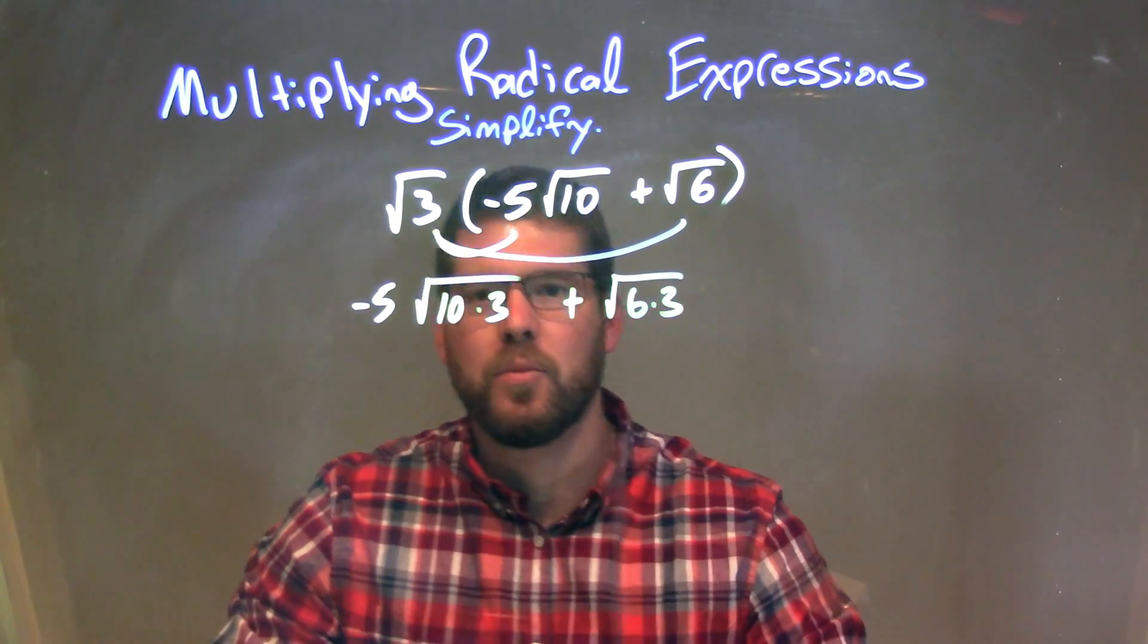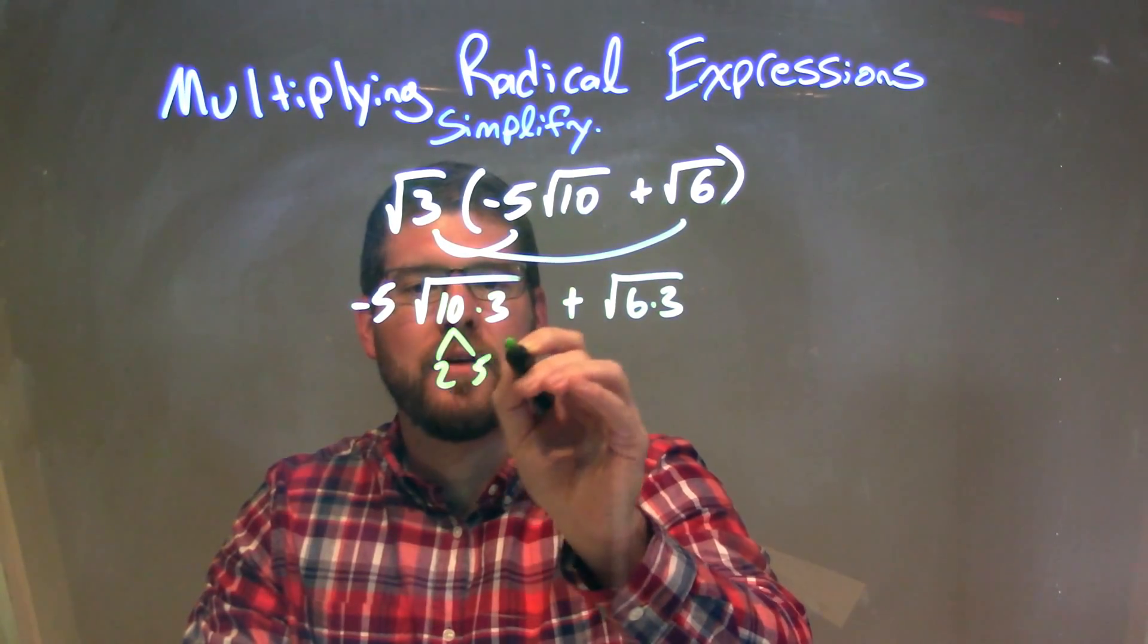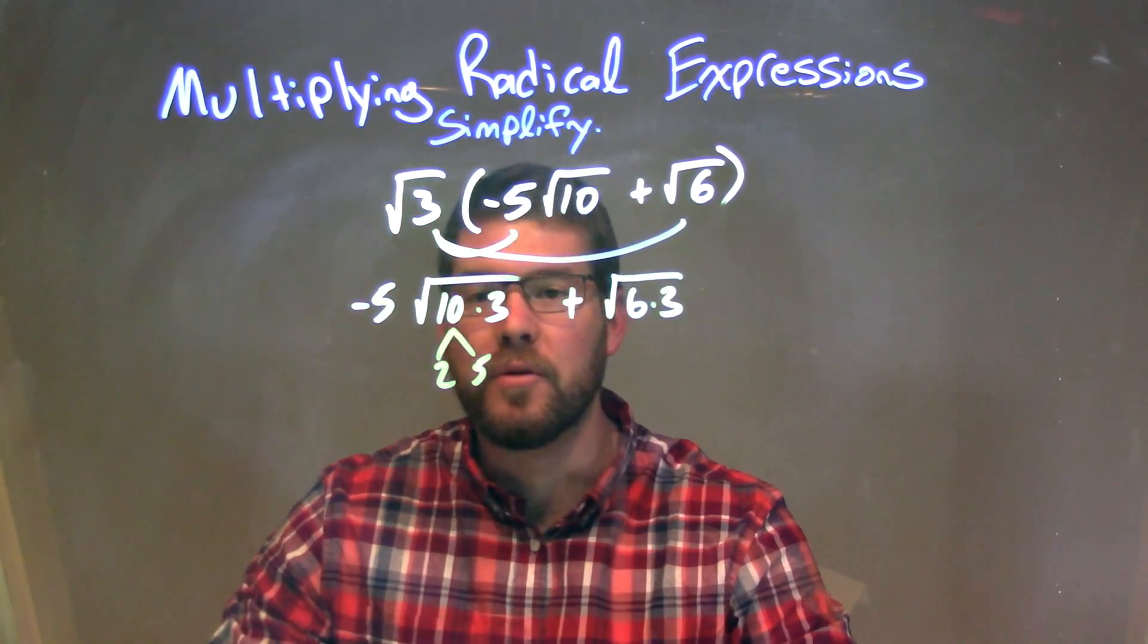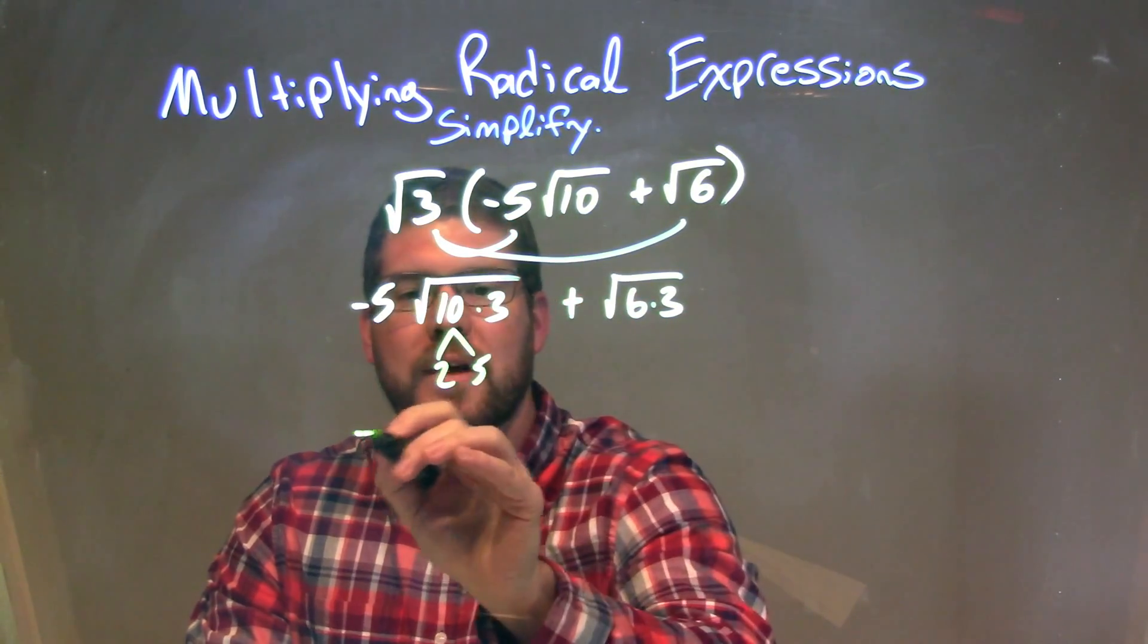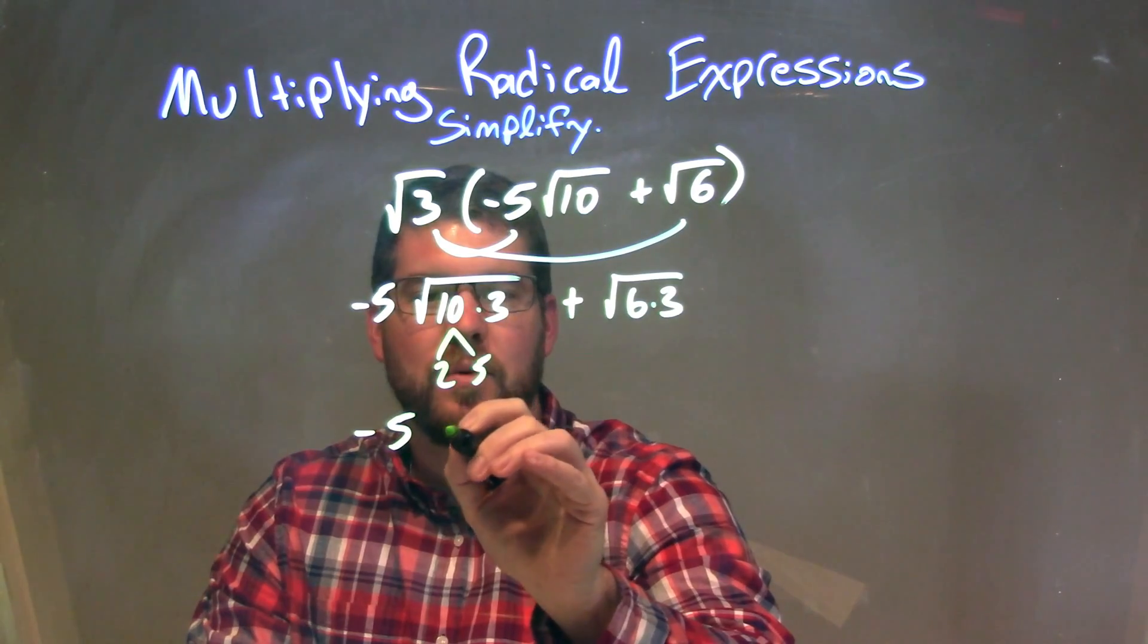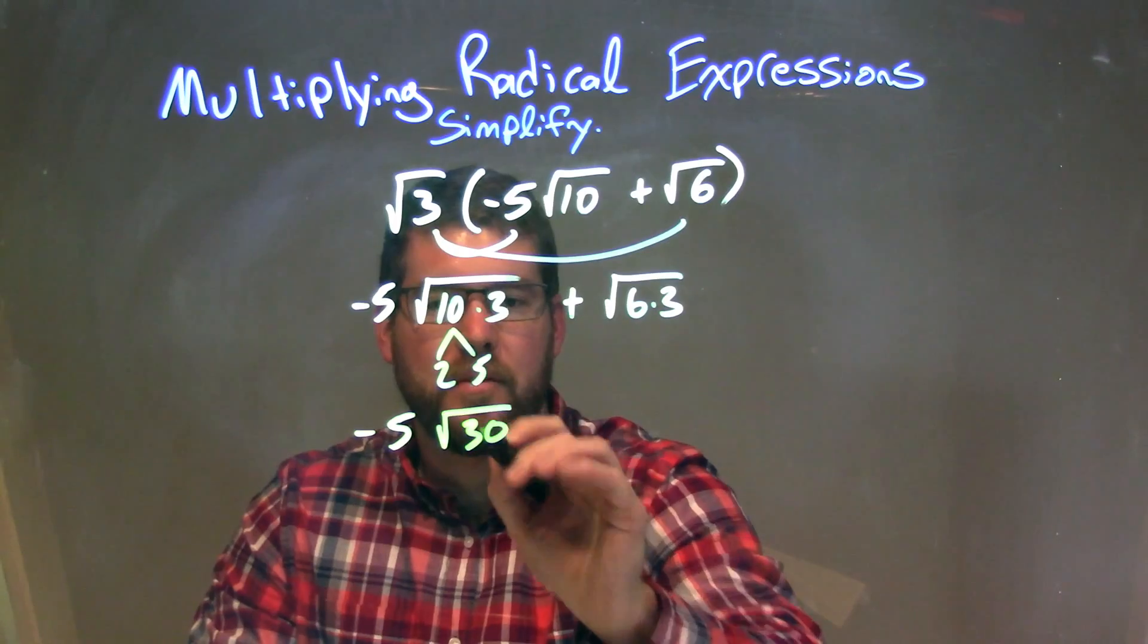Now I'm trying to simplify this. 10 comes out to be 2 times 5, but I don't see any pairs inside the square root. We don't see any pairs that we can circle. So when I simplify this, I have negative 5 times the square root of 10 times 3, which is 30.